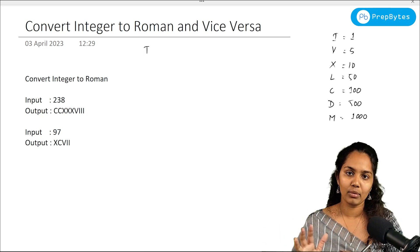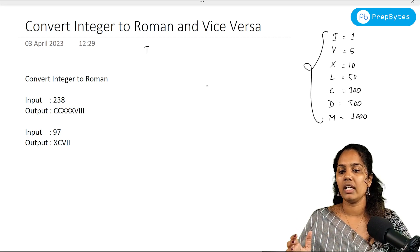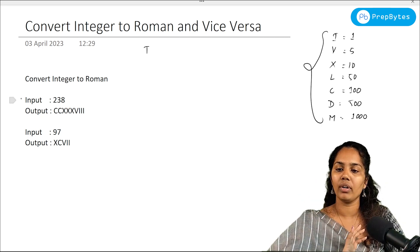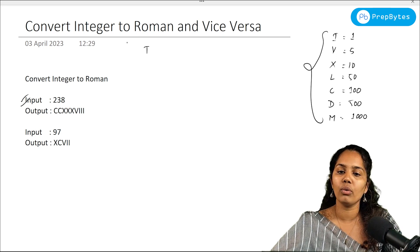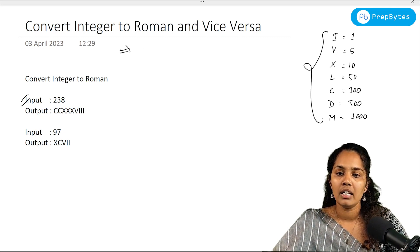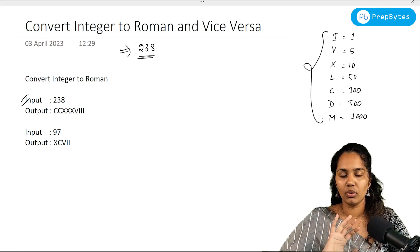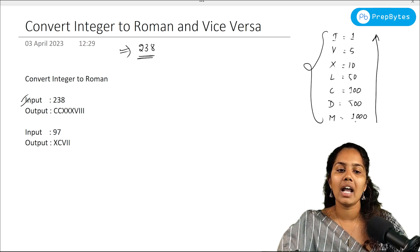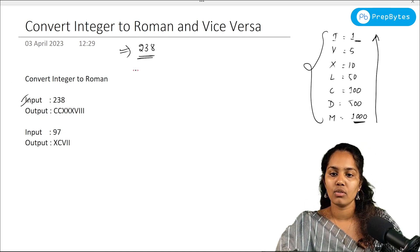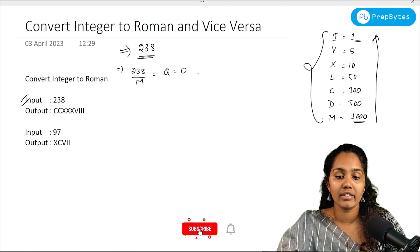Before actually going and converting any number into Roman, whenever you're dealing with Roman numbers you should make sure you already know these denotations. Now if I start with the example 238 - how should we actually go and convert it into a Roman number? Whenever we are dealing with this conversion, we have to move from M down to I. First, I'll divide 238 by M, giving a quotient of 0 and a remainder of 238.